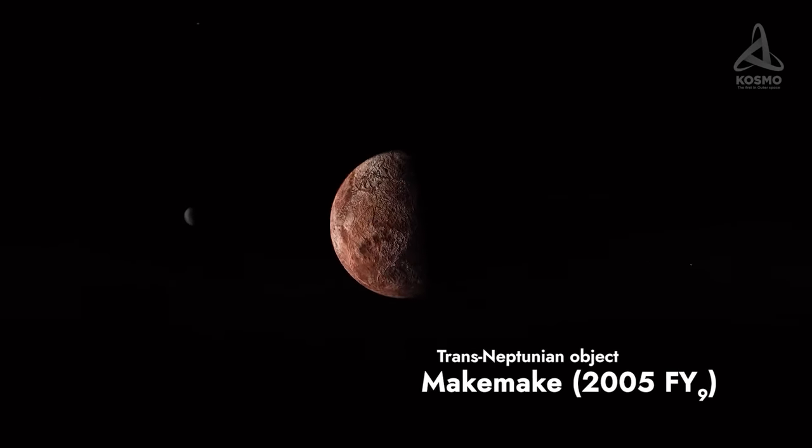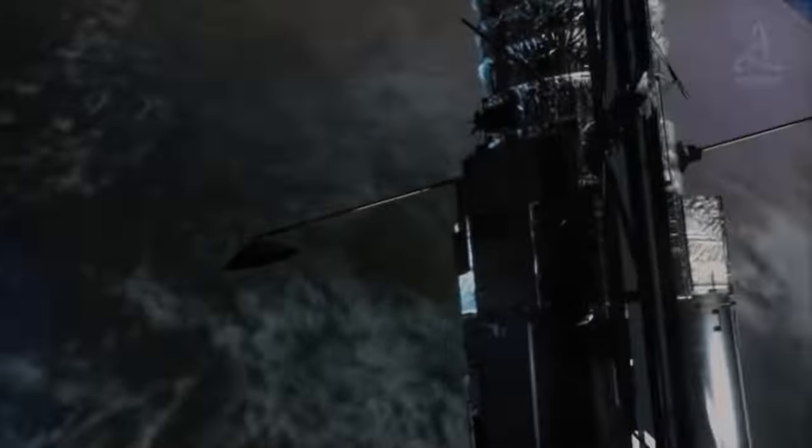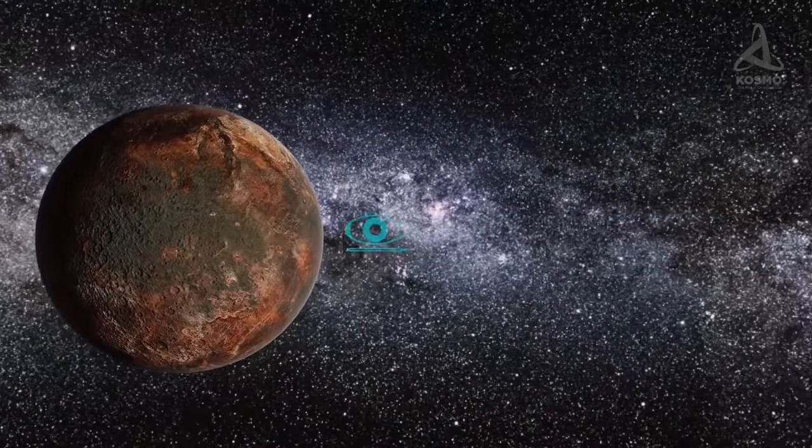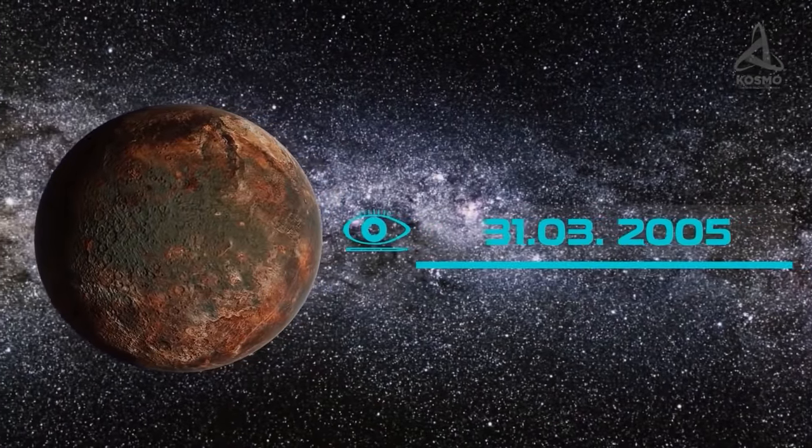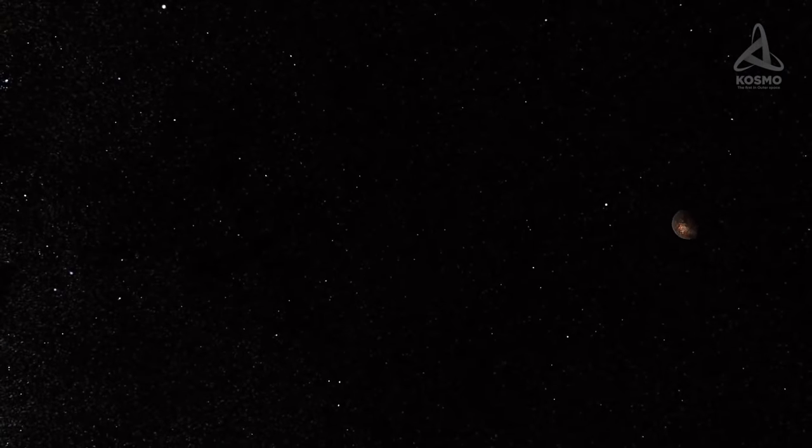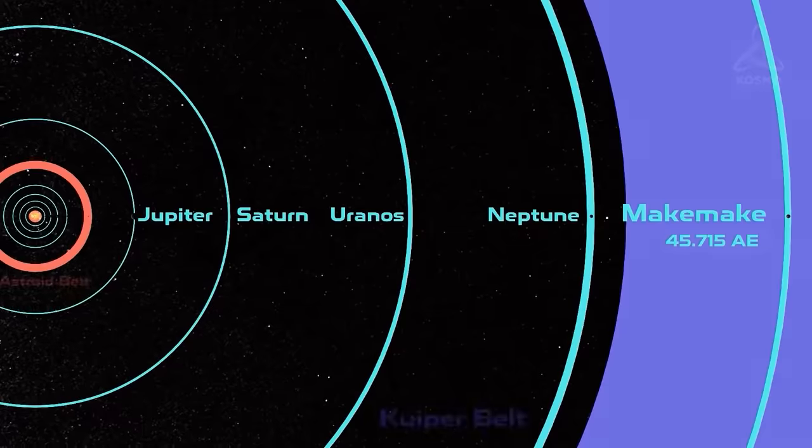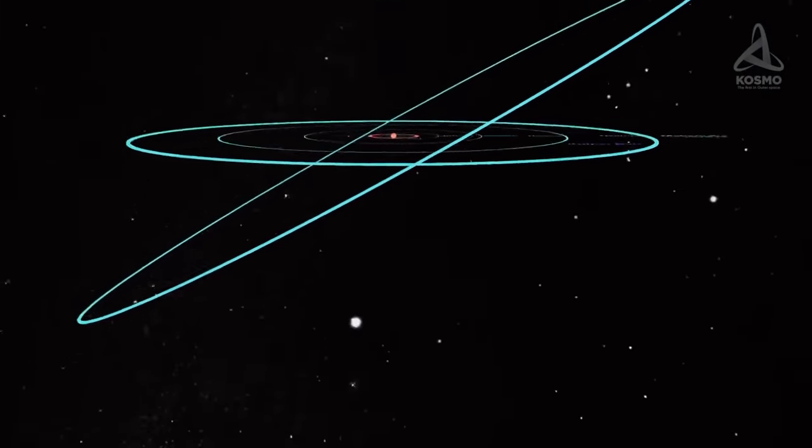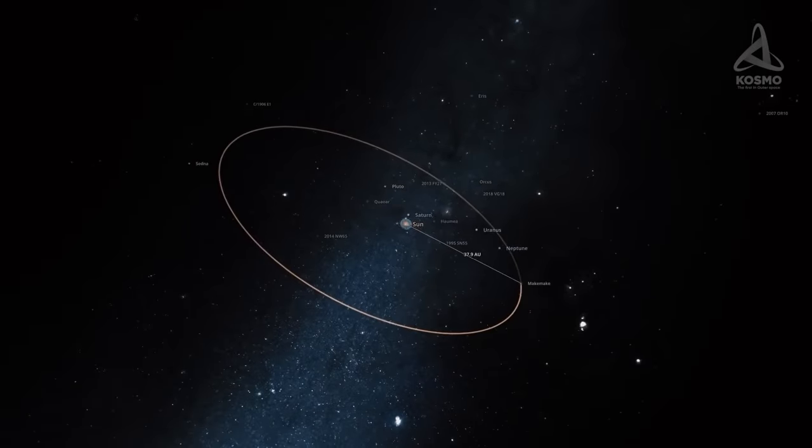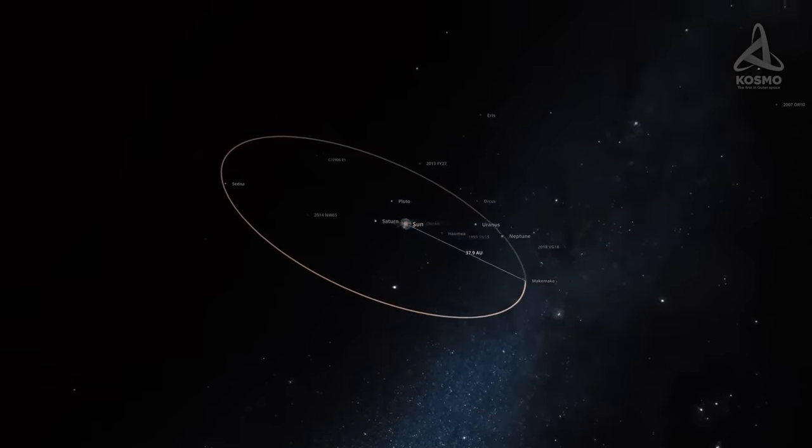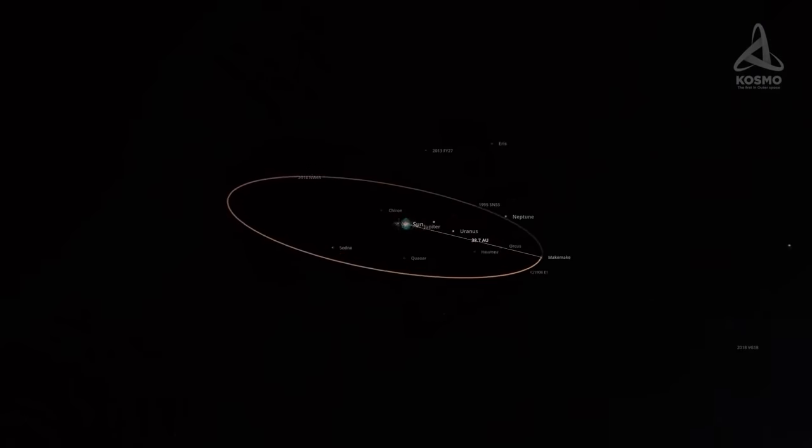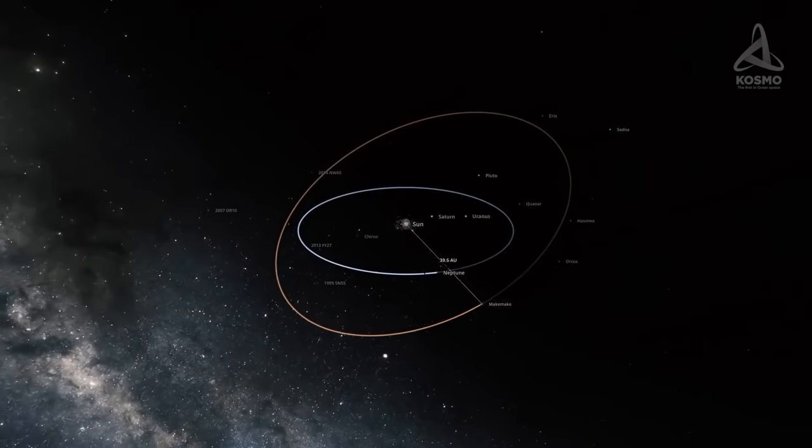This exoplanet was first seen in images taken on the 31st of March 2005. Four months later, on the 29th of July, information about the newly discovered celestial object was made available to the general public. When discovered, the planetoid was just slightly dimmer than Pluto. As for its location, at the time it was much higher than the ecliptic plane in the region of the constellation Coma Berenices.